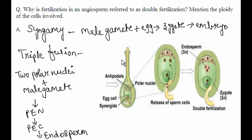The second process that occurs inside the embryo sac is triple fusion. The other male gamete moves to the central cell to fuse with the two polar nuclei. As you can see in the figure, this forms a triploid primary endosperm nucleus, abbreviated as PEN, which is triploid.